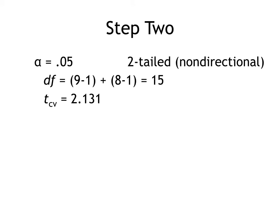My null hypothesis was non-directional. Notice that I add together the sample sizes to find my degrees of freedom. There were nine kids in one group and eight in the other, so my degrees of freedom is 15. I go to table C3 and find that the critical value for my test statistic is 2.131, plus or minus.